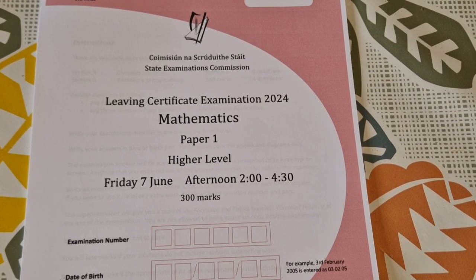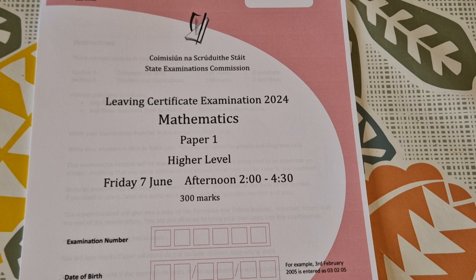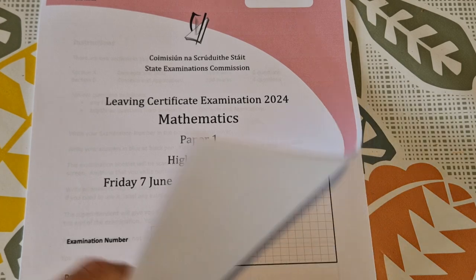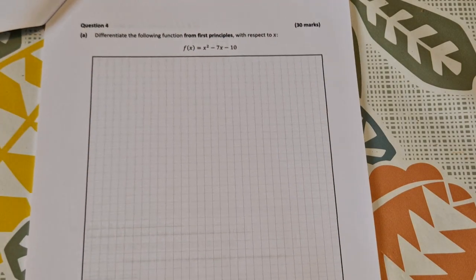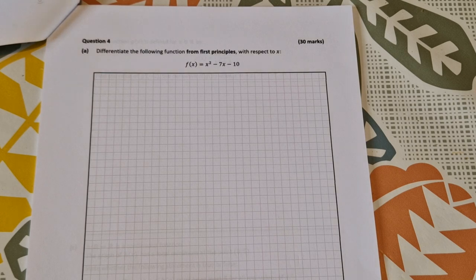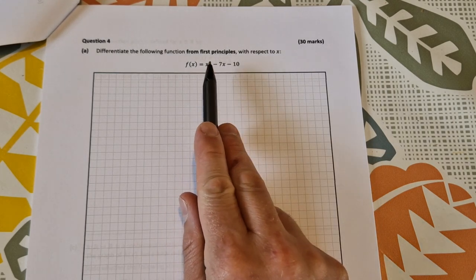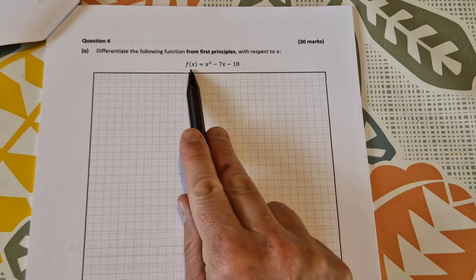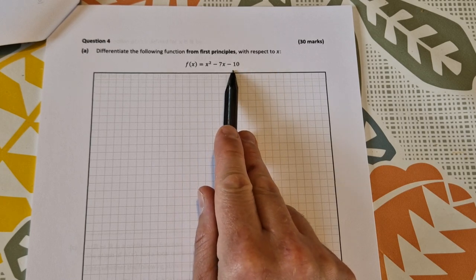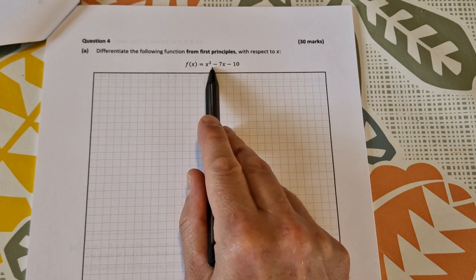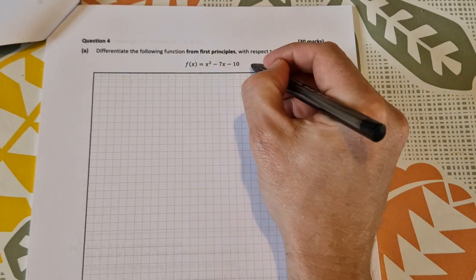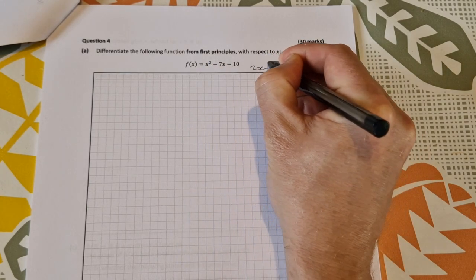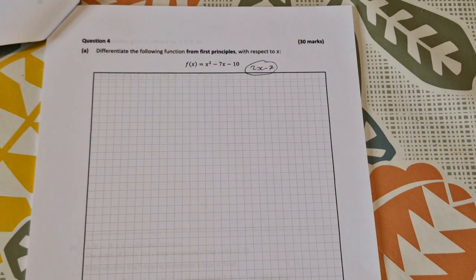Leaving Cert Higher Level Maths 2024. This is the solution video to Paper 1, Question 4. Question 4 is our next calculus question. We're asked in part (a) to differentiate the following from first principles with respect to x: f(x) = x² - 7x - 10. I always like to check what the solution will be by differentiating it straight away. If you differentiate that, you get 2x - 7. You do need to use first principles though to get that.